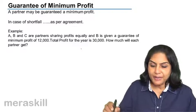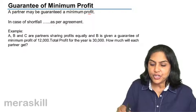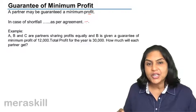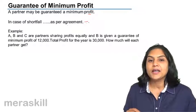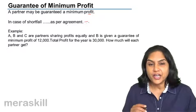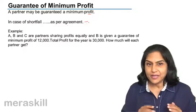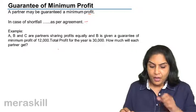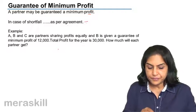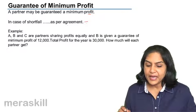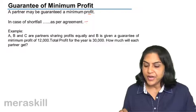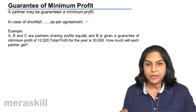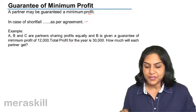So a partner may be guaranteed a minimum profit, and the shortfall would be covered as per the agreement. If nothing is mentioned, it would be in the profit-sharing ratio of the remaining partners. For example, A, B, and C are partners sharing profits equally, and B is given a guarantee of a minimum profit of 12,000.